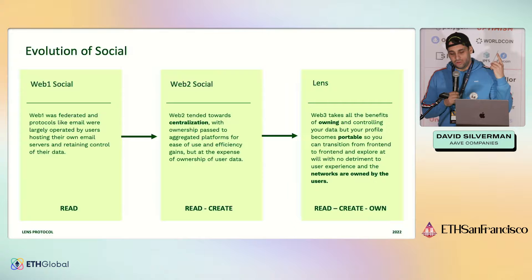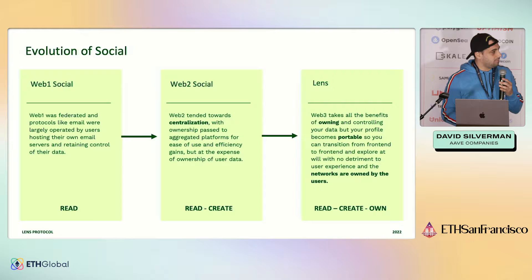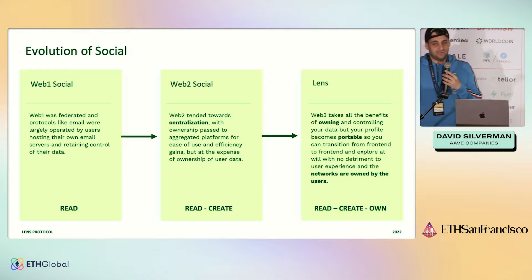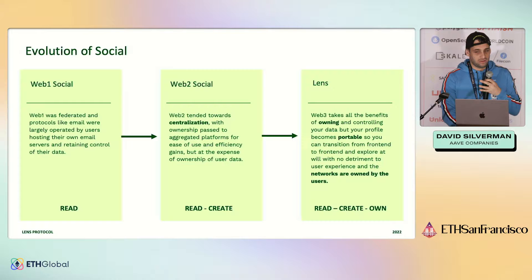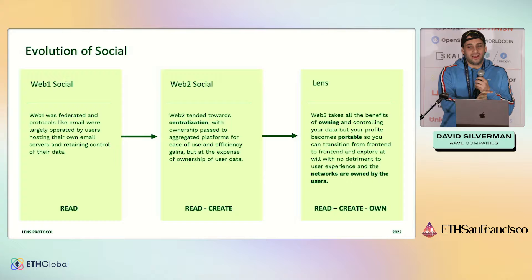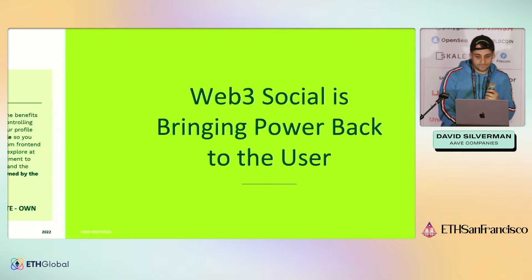With Web3, we want to make it so you own your content, you bring it to an application so it is fully portable, and that makes networks beholden to the users rather than users being beholden to the network. In a Lens application, you're not just authenticating — you're bringing an identifier so it can find your data. The data is in a more public area, which means it is forkable. You can switch experiences at will, and experiences can specialize for creators, curators, or consumers of content.